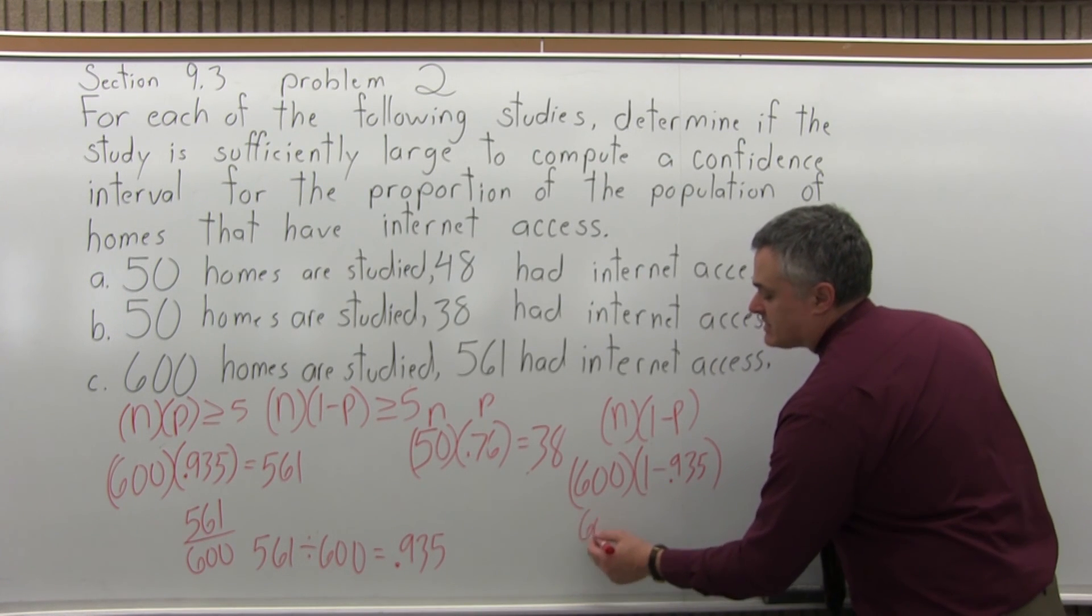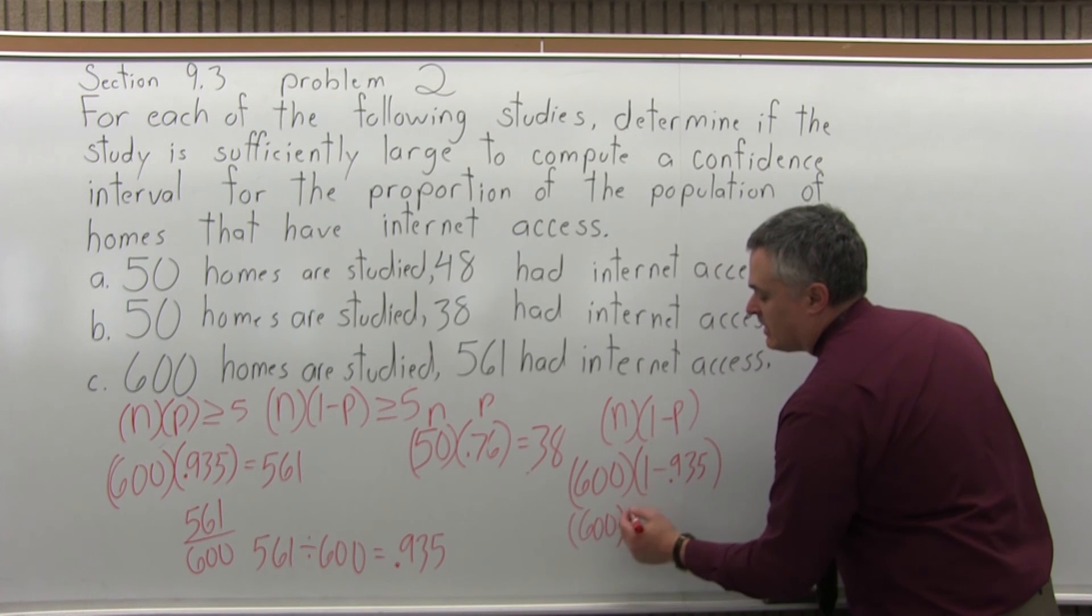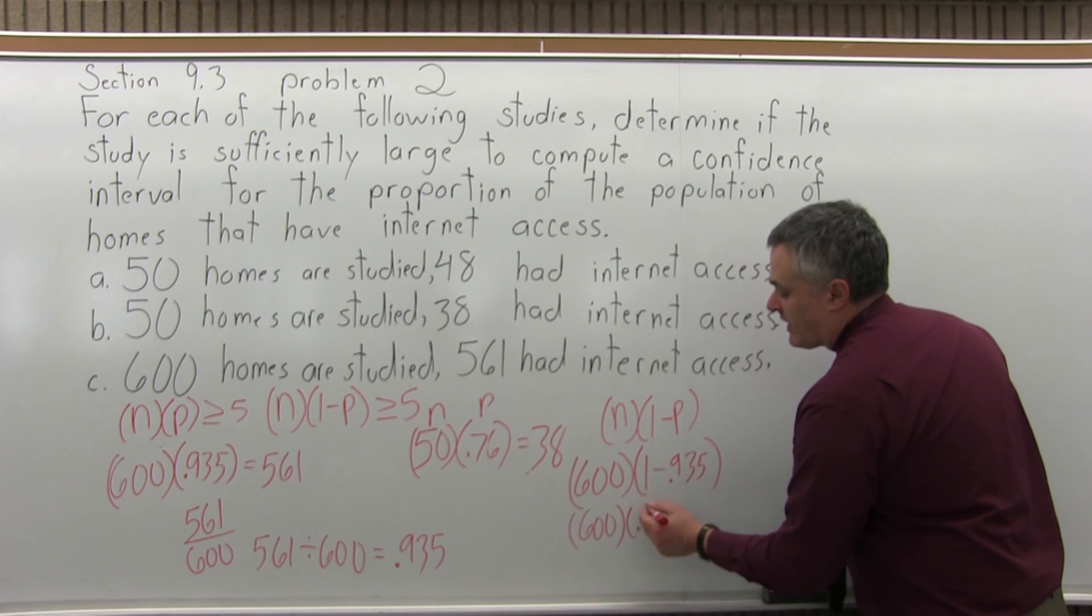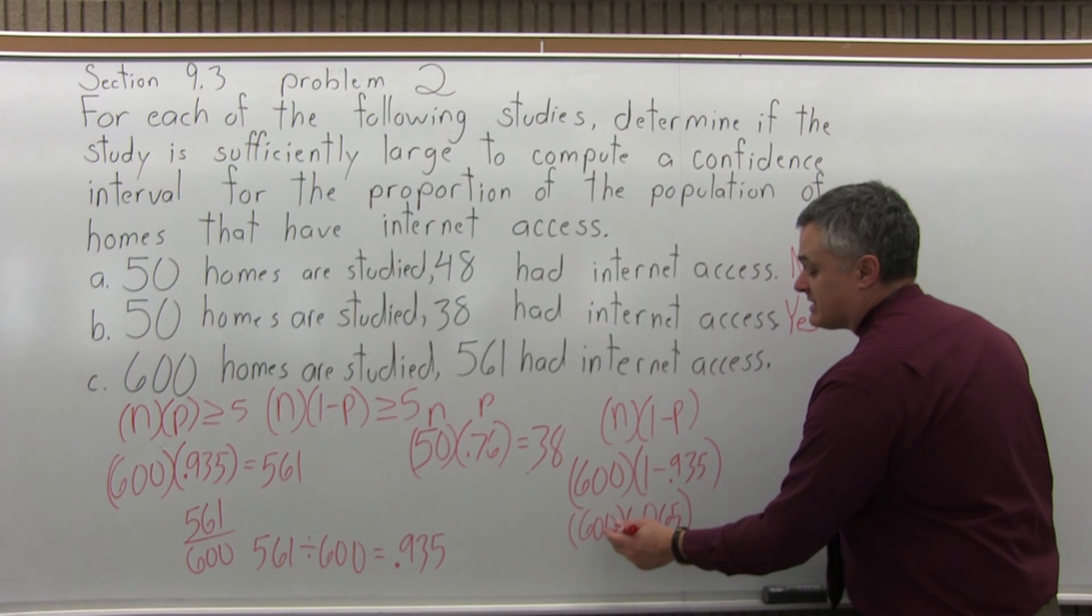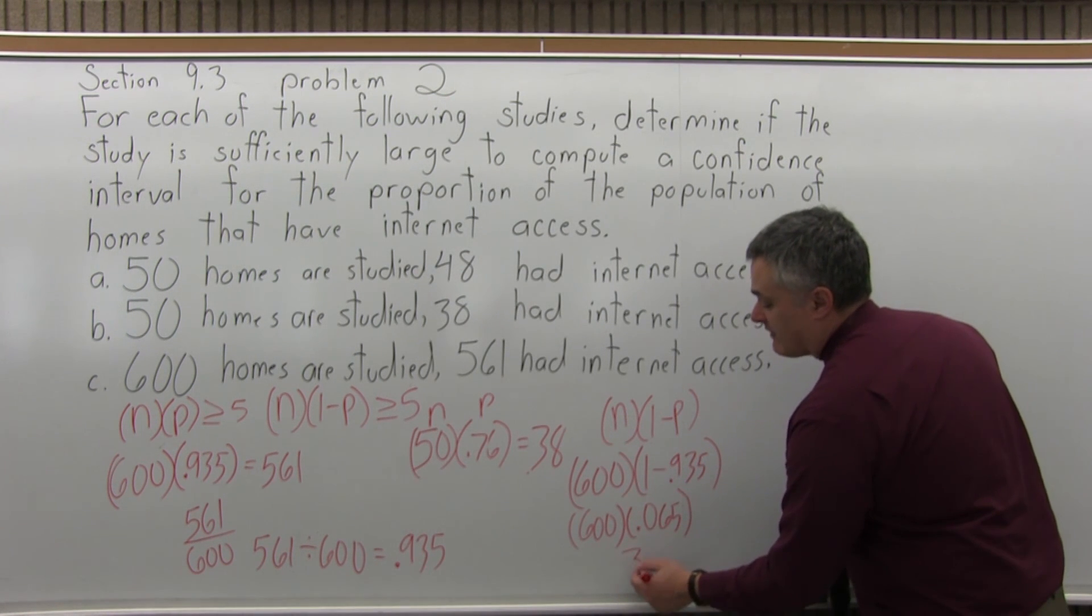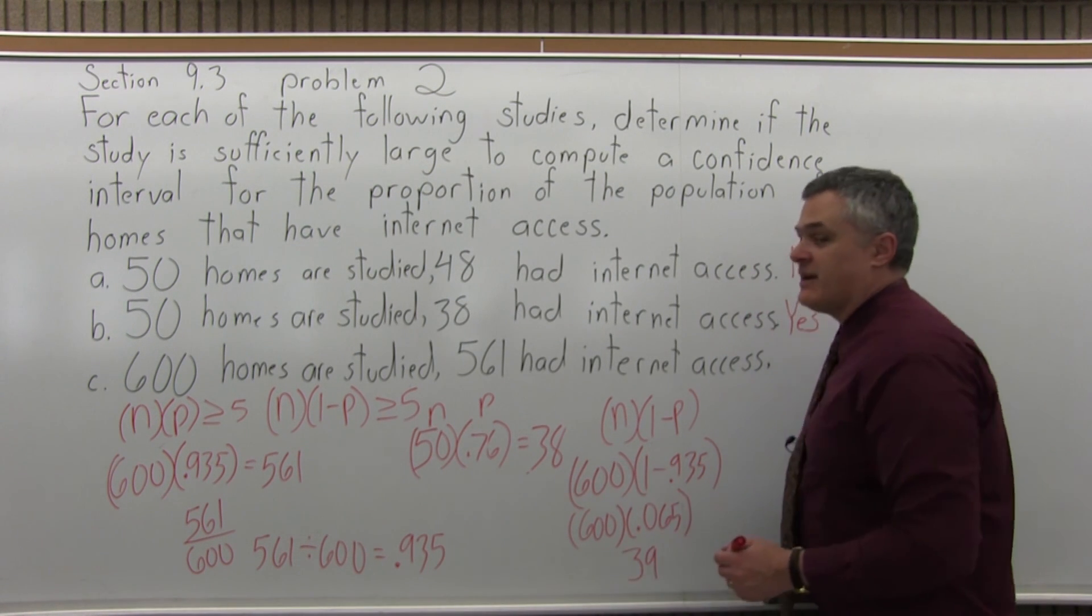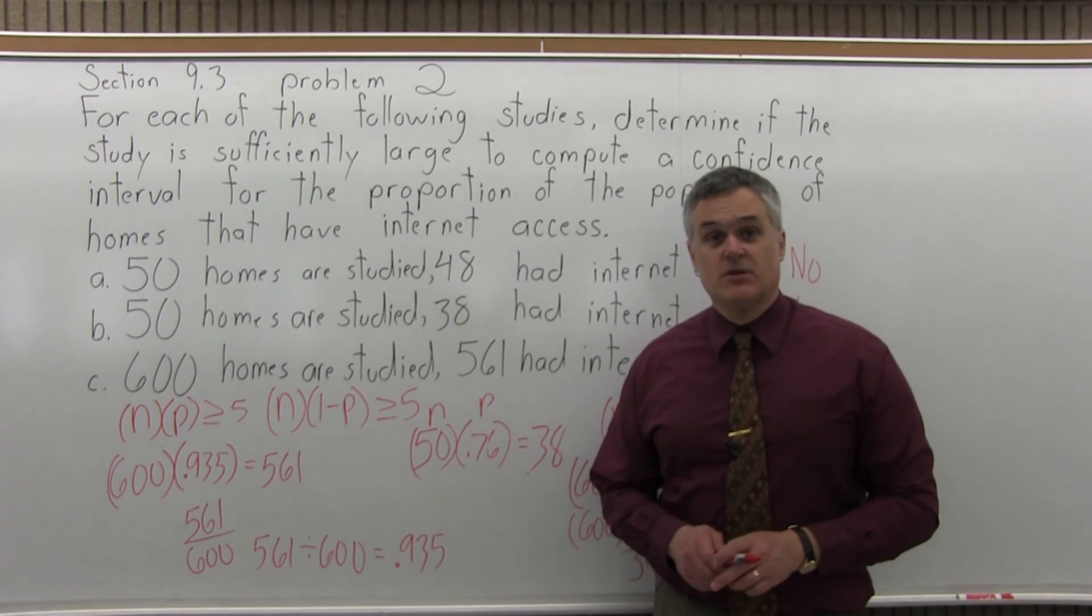So, let me keep the 600 for the left parenthesis. 1 minus .935 is .065. And then if you multiply 600 times .065, that result is 39. That's bigger than 5.